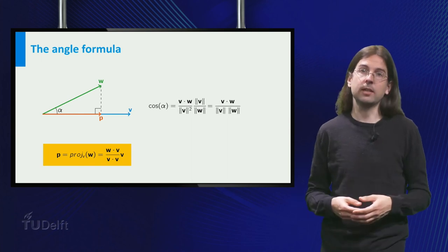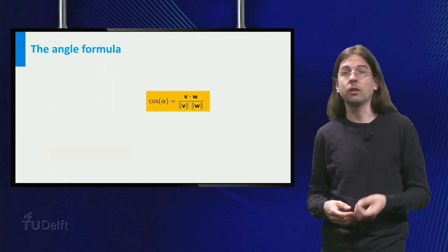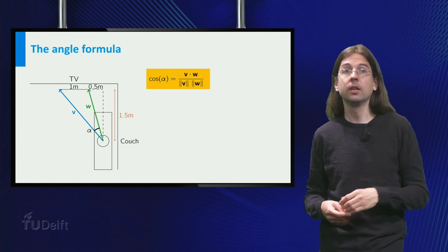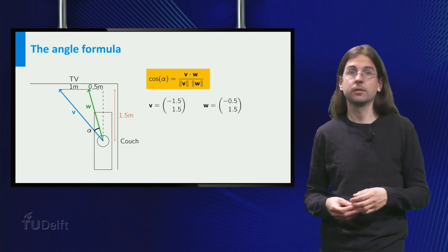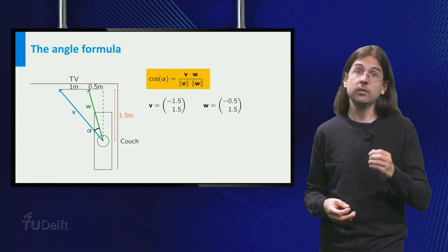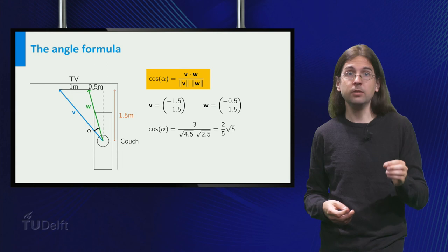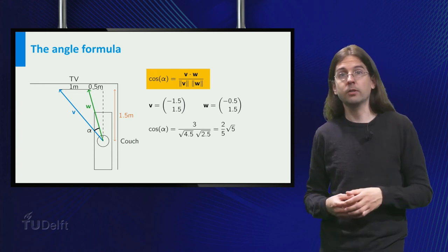Let us go back to the television. From the map you can see that the vectors are v equals (-1.5, 1.5), and w equals (-0.5, 1.5). Thus we can evaluate the cosine of the angle as the dot product of v and w equals 3, divided by the product of the norms,